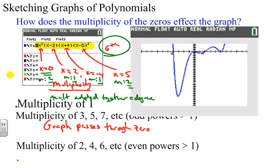Now, when you have an even power, or an even multiplicity of 2, 4, 6, and so on and so forth, like the ones that we have here at 0 and at 5, you can see right here that it's a little bit different.